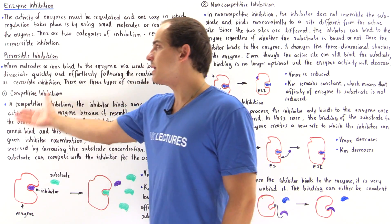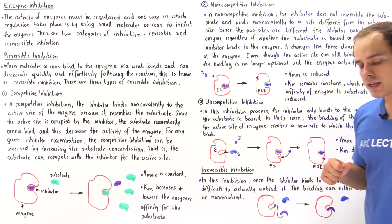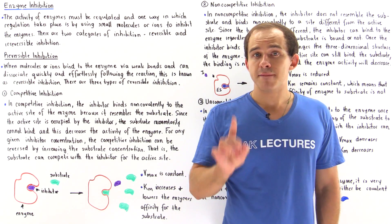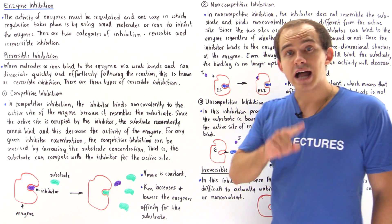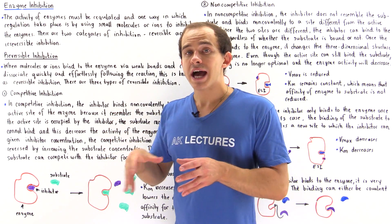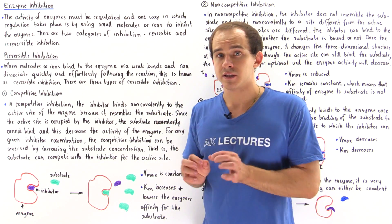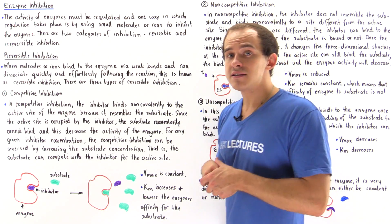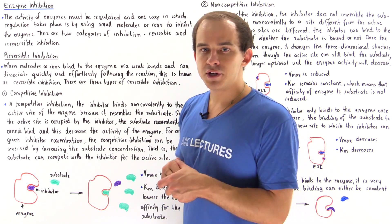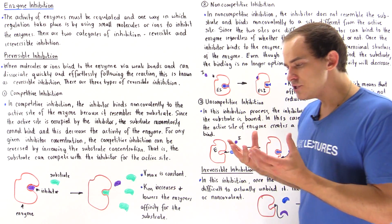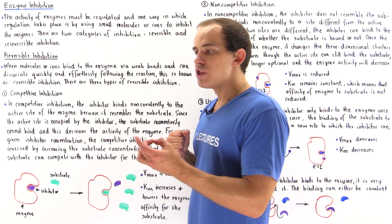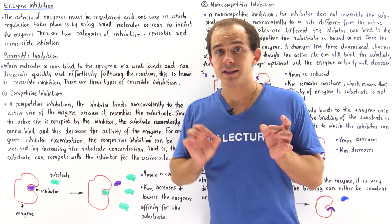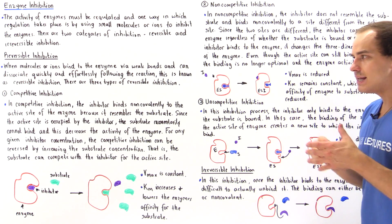Let's begin by defining and examining reversible inhibition. When our inhibitor molecule or ion binds to that enzyme via weak non-covalent forces, and when that inhibitor can easily and effortlessly dissociate from that enzyme following the reaction, this inhibition process is known as reversible inhibition. So basically, in reversible inhibition, our inhibitor binds to that enzyme via weak non-covalent forces and can easily dissociate from that enzyme at any given time.